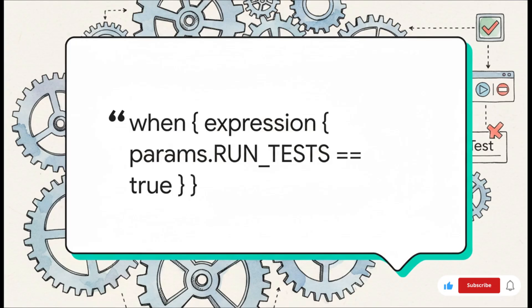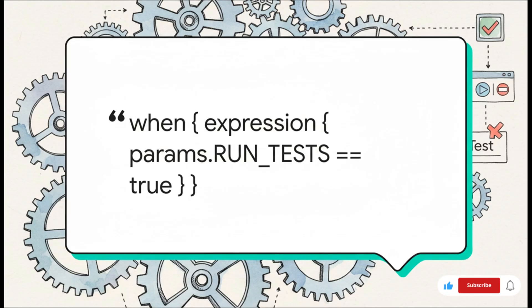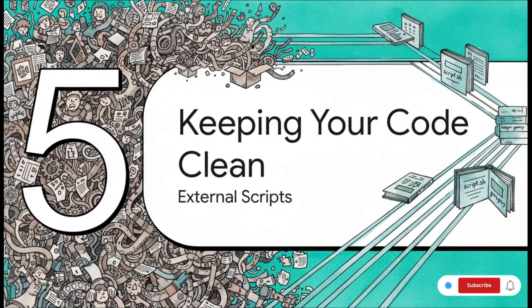Let's put two of these superpowers together. At the top we're defining a boolean parameter called 'runTests' and setting it to true by default. Then down in our Test stage, our 'when' condition is no longer checking for a branch — it's checking the value of that parameter. So when you go to run this job in Jenkins, you'll see a checkbox that says 'Run Tests'. If you leave it checked, the Test stage runs. If you uncheck it, the entire stage gets skipped. It's a super simple way to give people control over how the pipeline behaves.